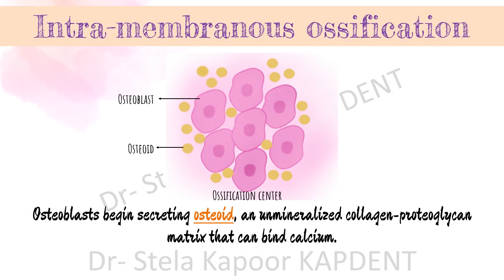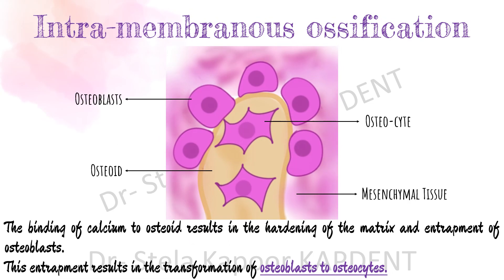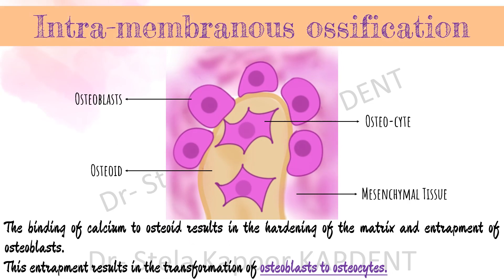The osteoblasts then start secreting osteoid, which is a bone precursor — an unmineralized collagen proteoglycan matrix that has the ability to bind calcium. The binding of calcium to the osteoid results in the hardening of the matrix and entrapment of these osteoblasts, which now transform into osteocytes.